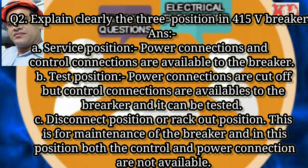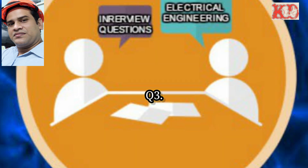Third, disconnect position or rack out position: this is for maintenance of the breaker, and in this position both the control and power connections are not available. These were the three positions of the breaker — first service position, second test position, and third rack out position.